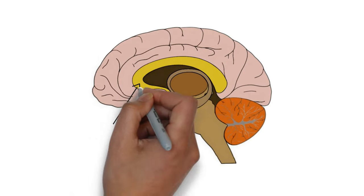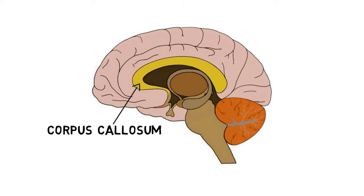The corpus callosum is a large collection of nerve fibers that connects the two cerebral hemispheres. When the corpus callosum is damaged, it may impair the ability of the left and right cerebral hemispheres to coordinate movement between limbs and to inhibit unwanted movements in the alien hand while one is making intentional movements with the functional hand.